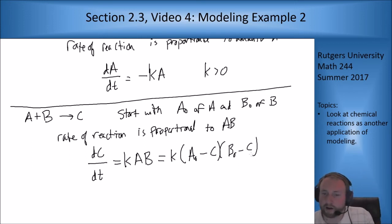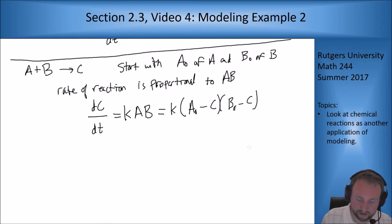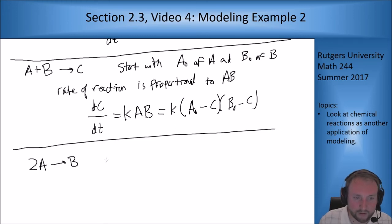Now this guy's harder, this guy's non-linear in C. There's a C squared term that's going to pop out of this. So this is a harder one to solve, but you can write a model for it fairly easily and then use other methods. You can use methods we'll talk about later to get solutions for that. Similarly, if I have a reaction where two A's are combining to form a B,